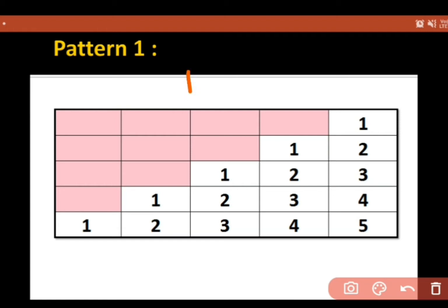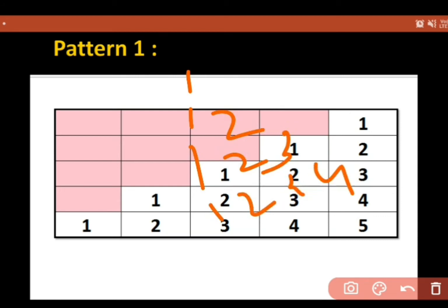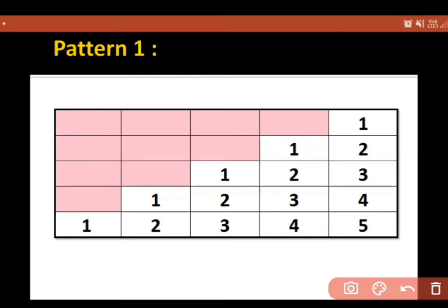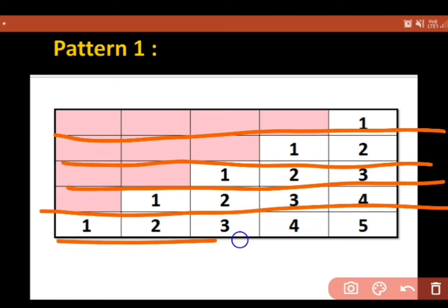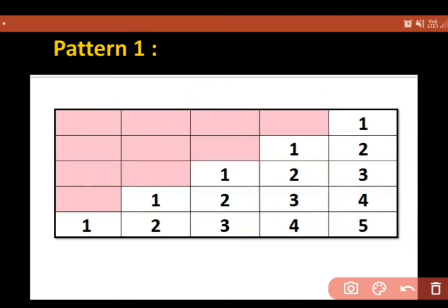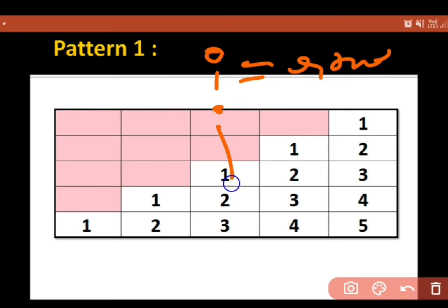I told you previously in my videos how we are going to display a pattern. If you know, then it is easy; if not, I will tell you. We have five rows — row one, two, three, four, five — and exactly five columns. Five rows and five columns means one variable for rows and one variable for columns.